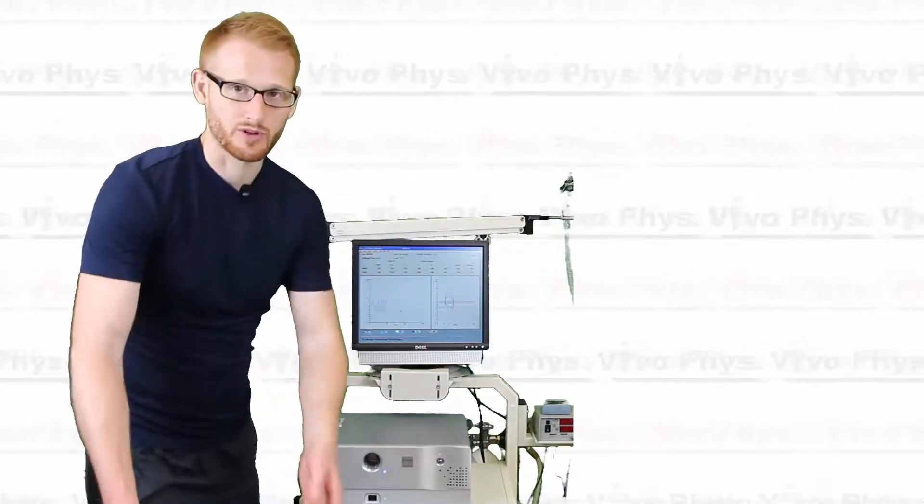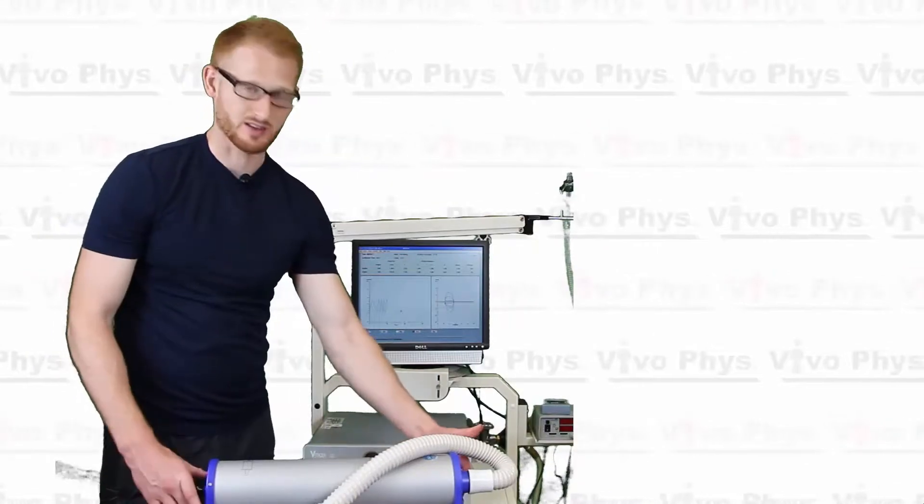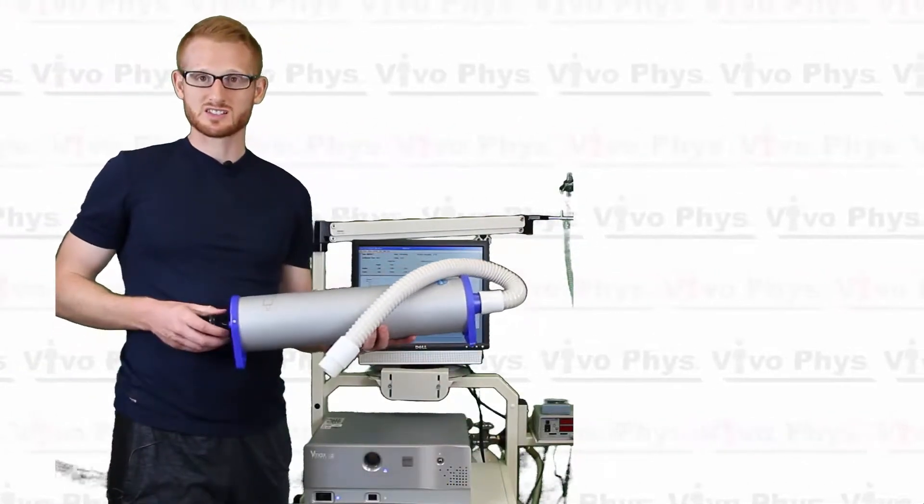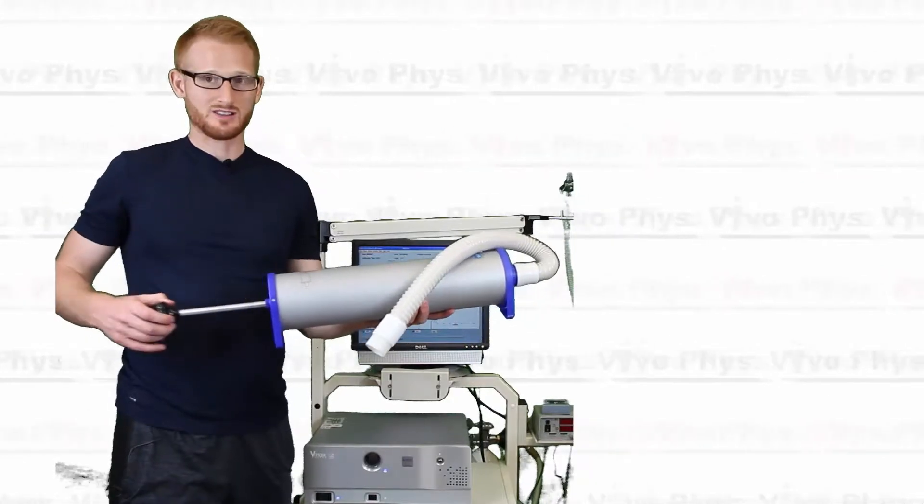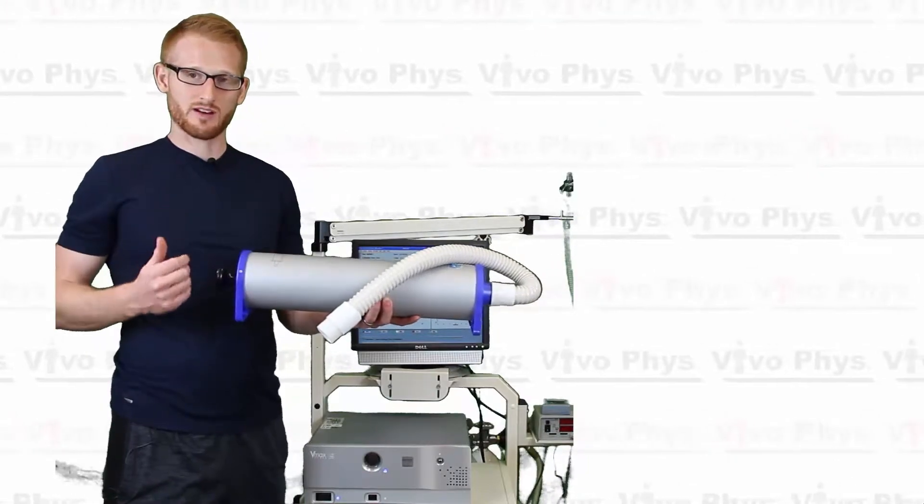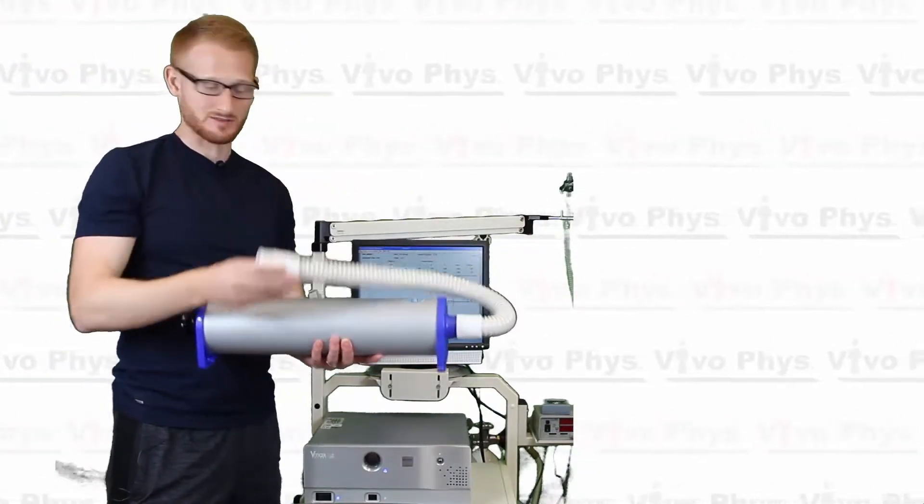Alright, in order to do a flow calibration, you need a standardized syringe, something like this here. So this is a 3 liter syringe, most of these systems are going to come with one. It's literally a giant syringe, here's the plunger. So it's going to take in 3 liters of air and pump that 3 liters of air through this tube and into the system.